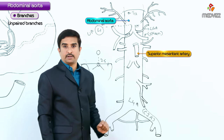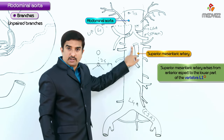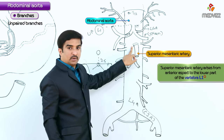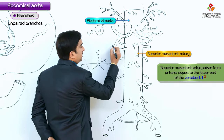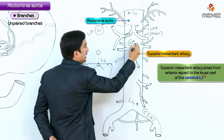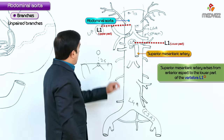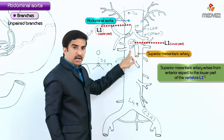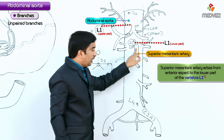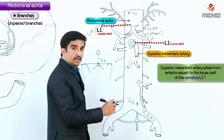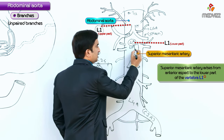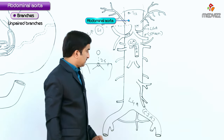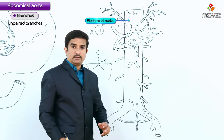The next unpaired branch is the superior mesenteric artery, which arises from the anterior aspect at the lower part of the L1 vertebra. So both the celiac trunk and the superior mesenteric artery originate at L1: upper part of L1 is the celiac trunk, and lower part of L1 is the superior mesenteric artery.